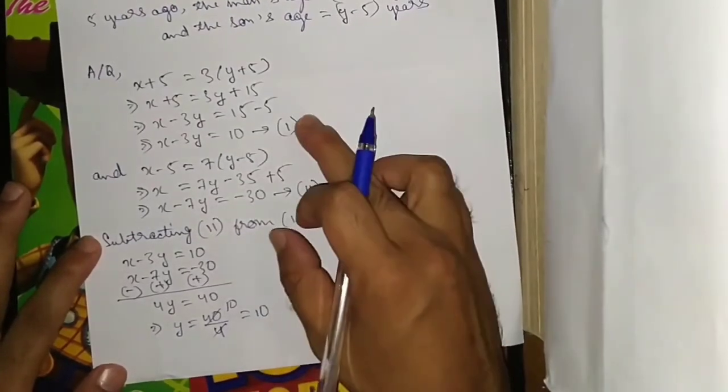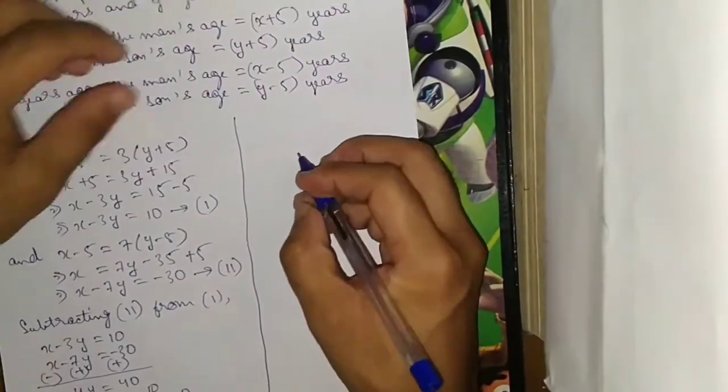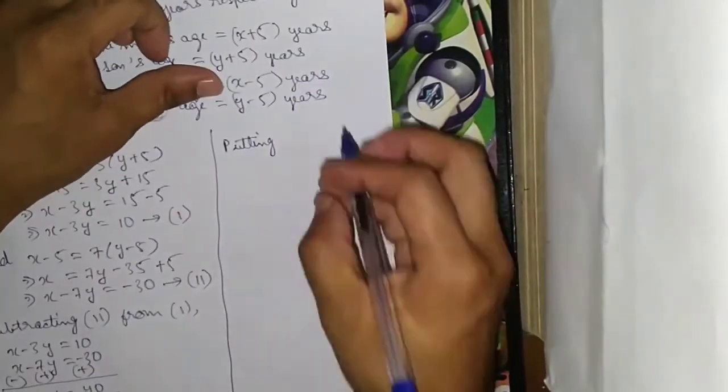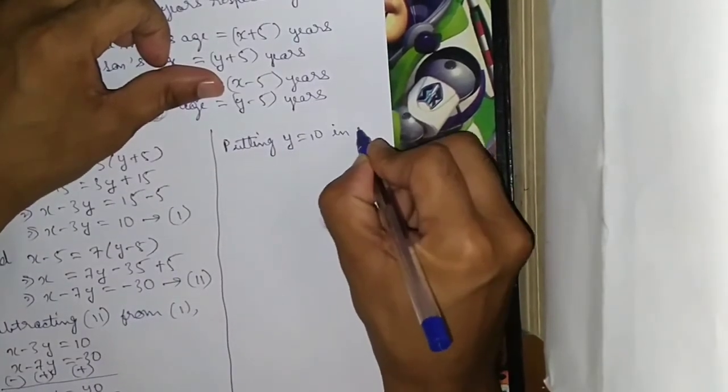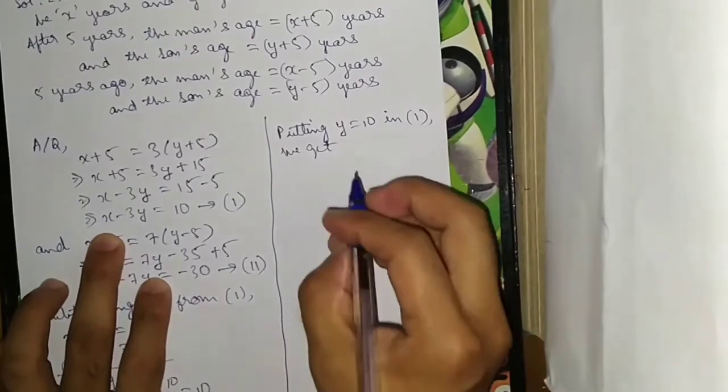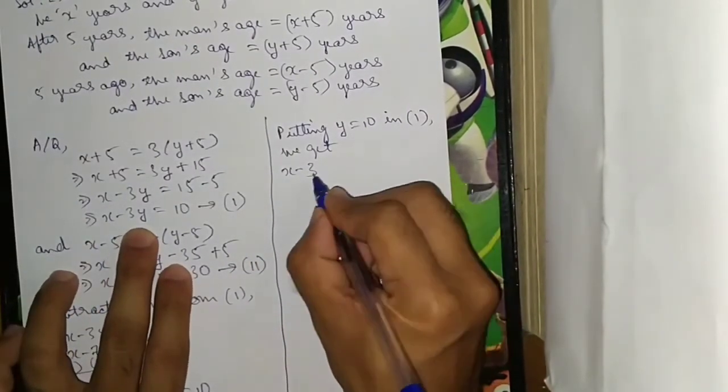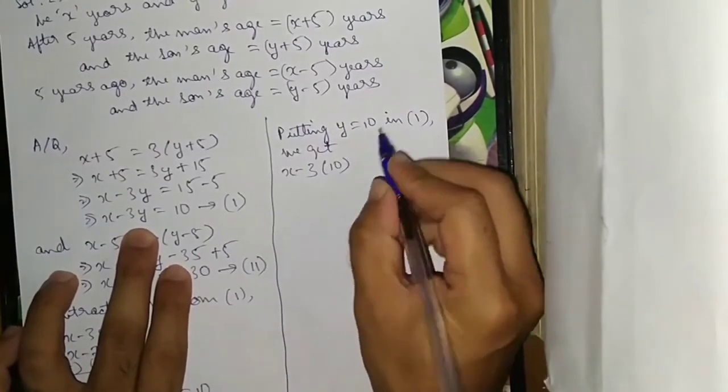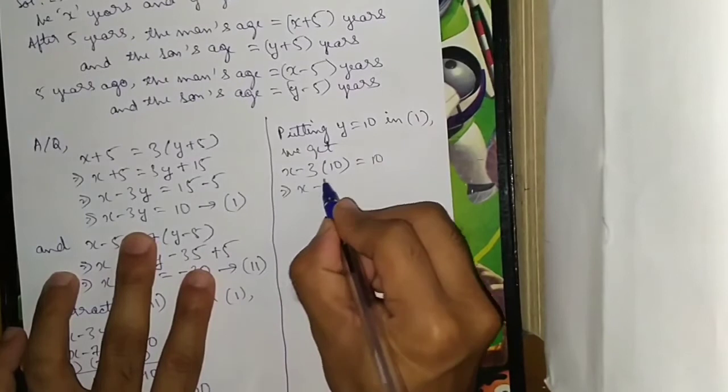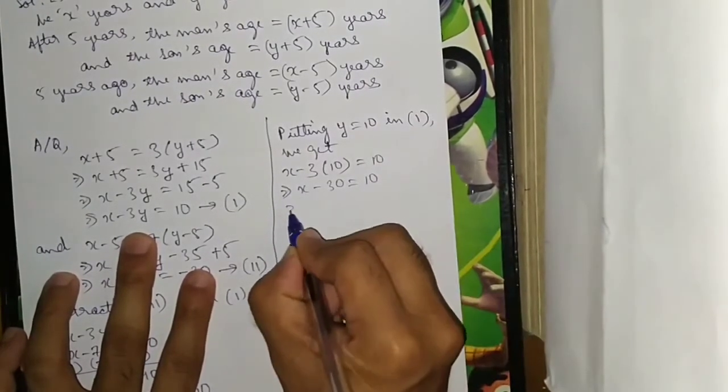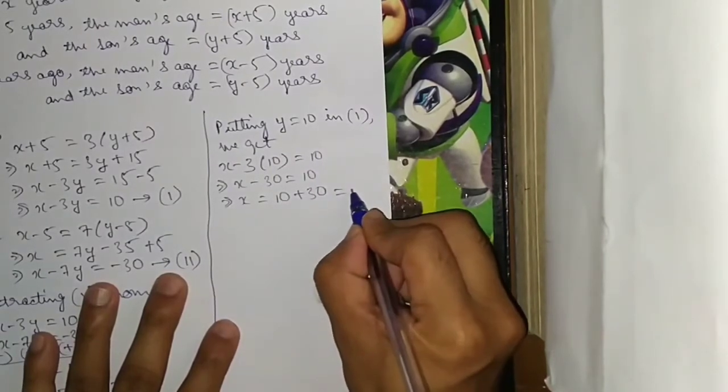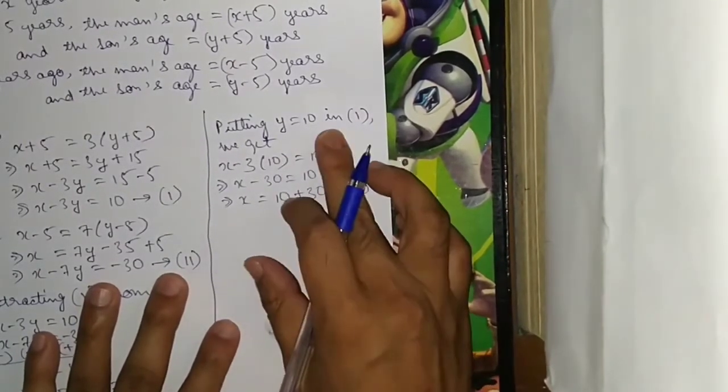Substituting Y equals 10 into equation 1: X minus 3 into 10 equals 10. So X minus 30 equals 10, and X equals 10 plus 30, which is 40.